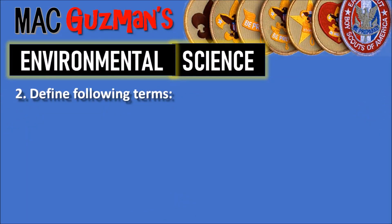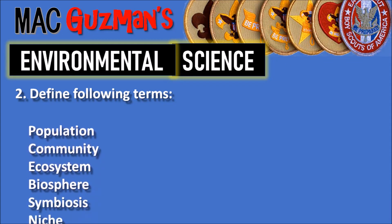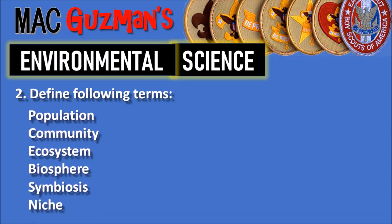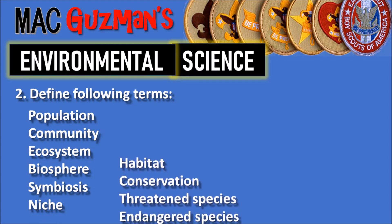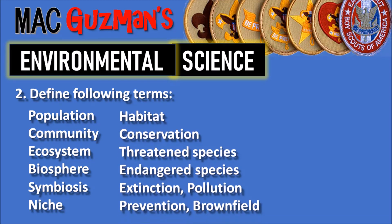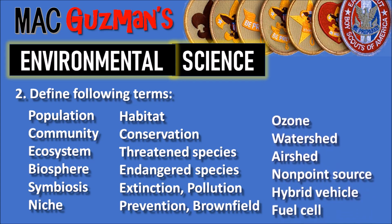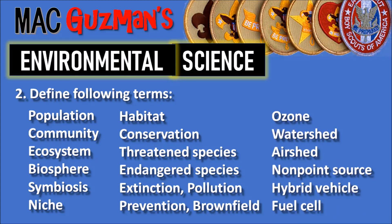Number 2 says to define the following terms: Population, Community, Ecosystem, Biosphere, Symbiosis, Niche, Habitat, Conservation, Threatened Species, Endangered Species, Extinction, Pollution, Prevention, Brownfield, Ozone, Watershed, Airshed, Nonpoint Source, and Hybrid Vehicle.